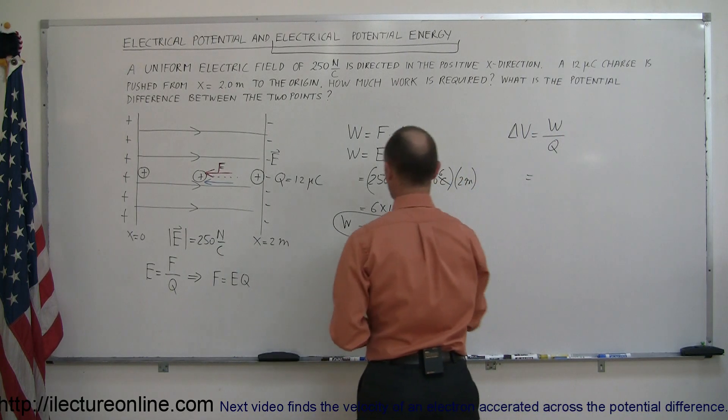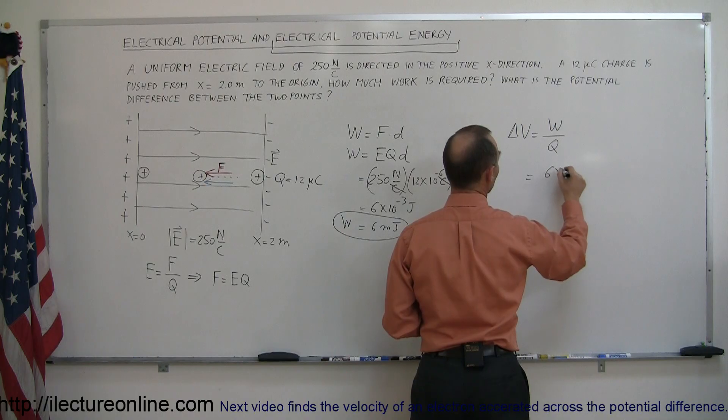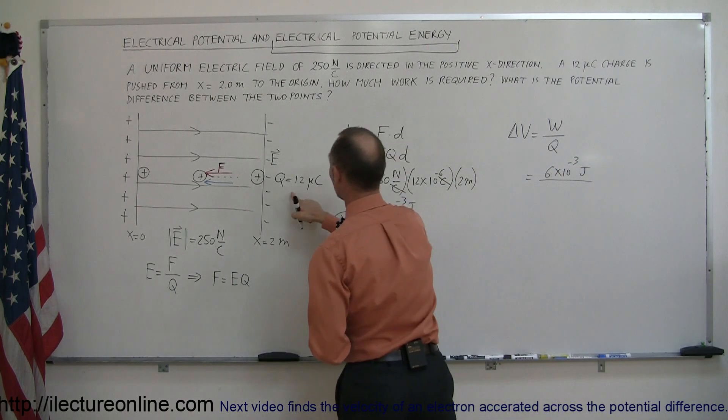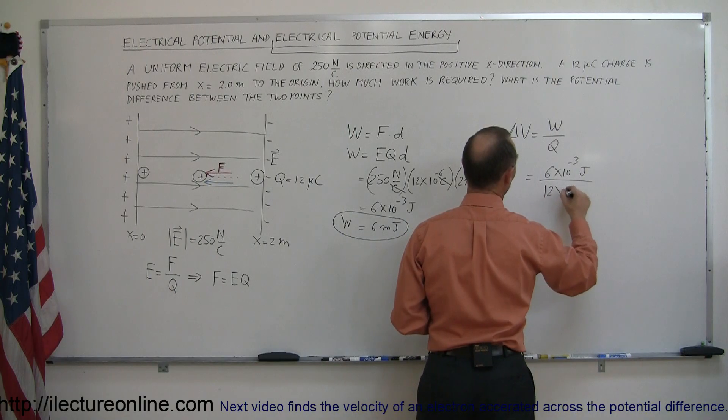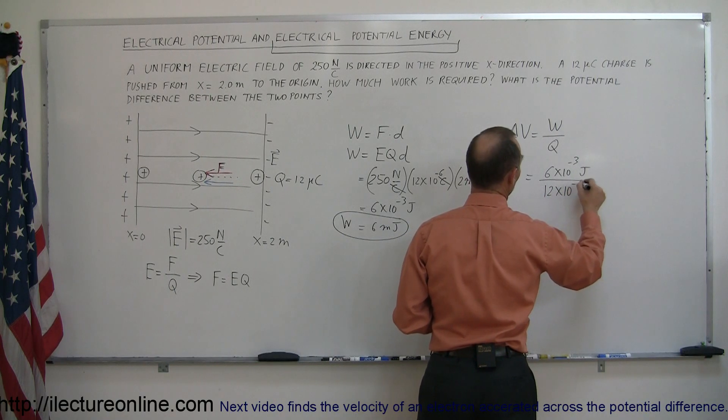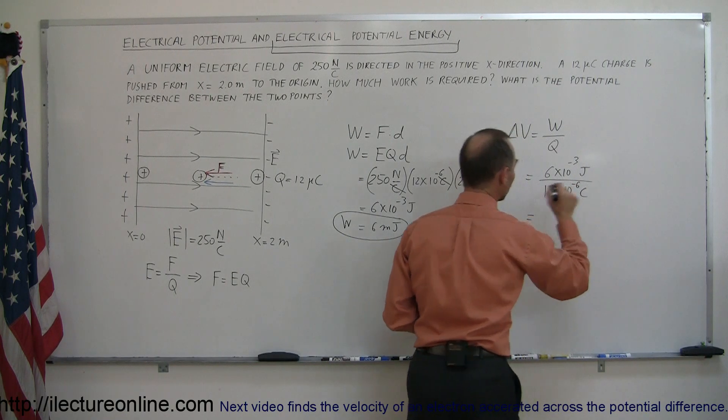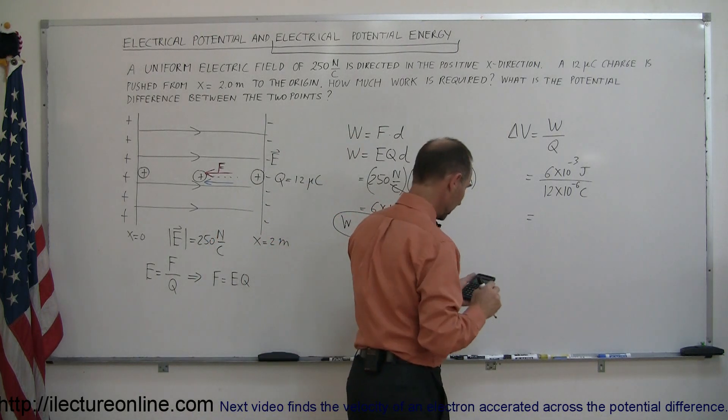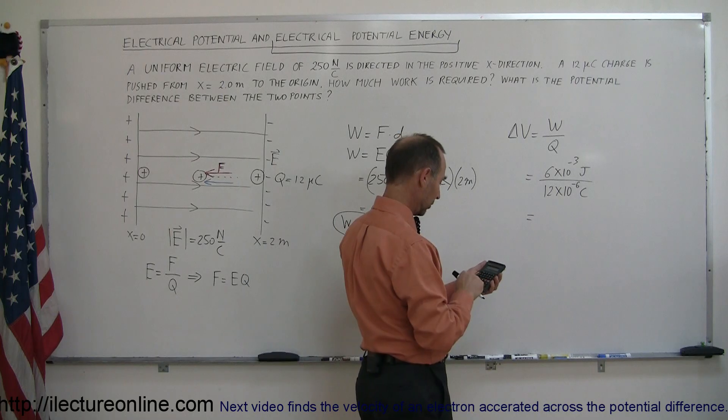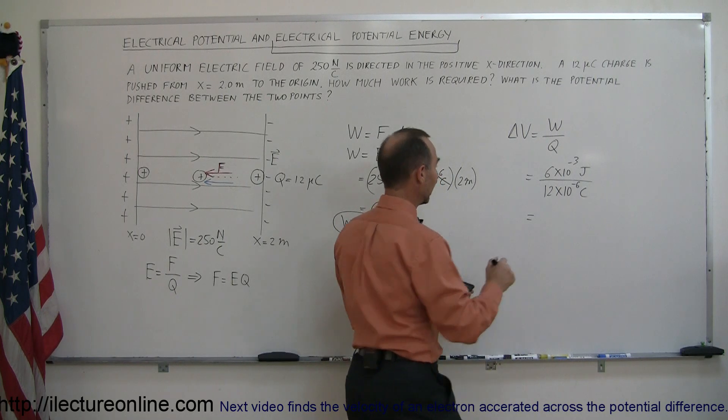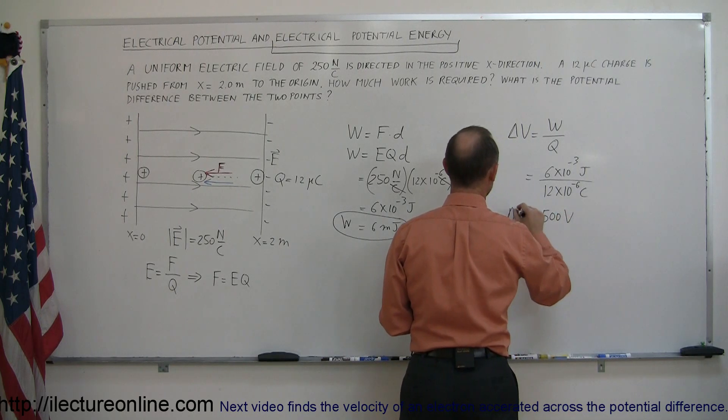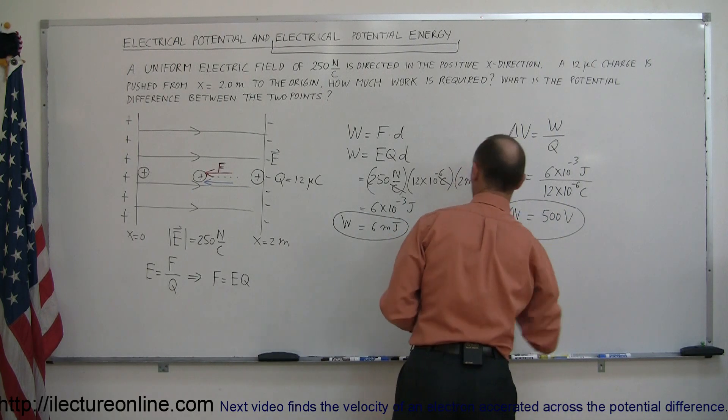So in this case, the work done is equal to 6 times 10 to the minus 3 joules, and the charge is equal to 12 times 10 to the minus 6 coulombs. And so joules per coulomb, the unit of that is volts. And if we throw that into our calculator, so we divide that by 12e to the 6th minus equals, and so that's equal to 500 volts. Delta V, the potential difference is 500 volts.